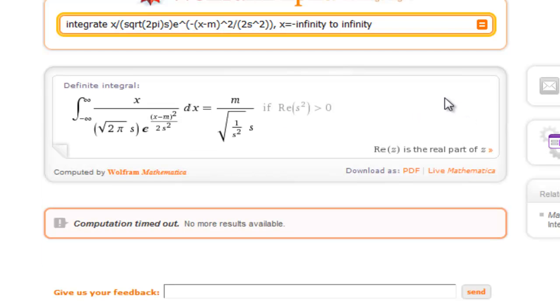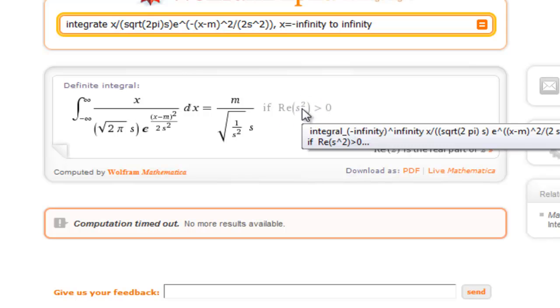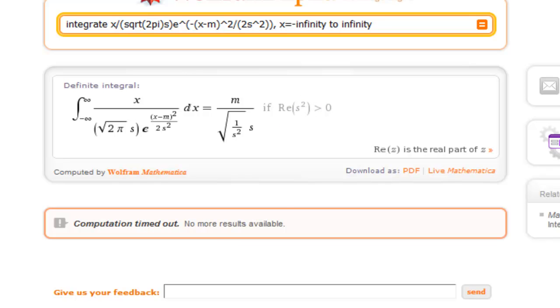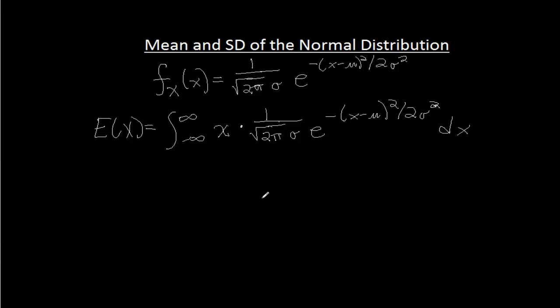Okay, now this is interesting here. Wolfram Alpha thinks that it can't do it. But if you look at this, we have M over the square root of 1 over S squared times S. M over the square root of 1 over S squared times S. That's so long as the real part, the standard deviation squared is greater than zero. We don't have to worry about that because our standard deviation is a real number. Let's put that back in here. And I want to show you that that's just mu.